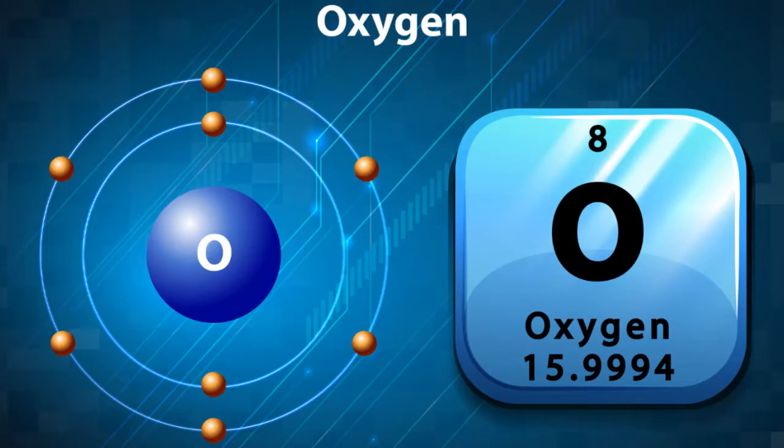As you may remember, the numbering of the chemical elements is based on the number of protons in the nucleus. So oxygen, which has the atomic number 8, has 8 protons in the nucleus and 8 electrons orbiting around it in the shell. In addition to that, there are 16 neutrons in the nucleus. The number of neutrons is always double the number of protons.